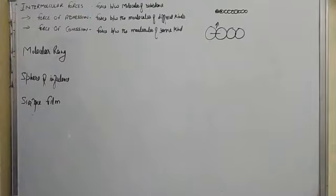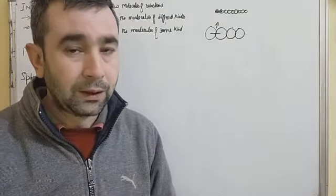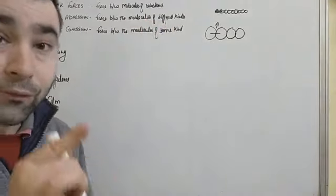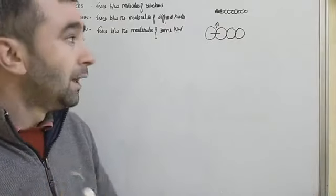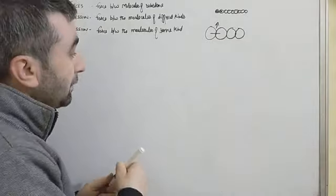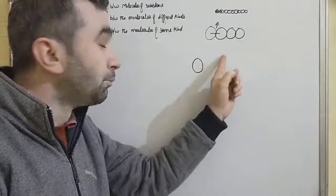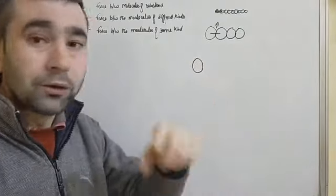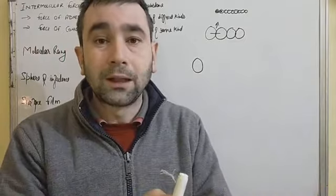Now let us discuss the types of intermolecular forces. The first type is the force of adhesion. The force of adhesion means the force between molecules of different kinds. For example, the board is different and the marker is different, but the molecules of the marker are sticking with the board. So when I write something on the board, the molecules create a bond with it — the board is different and the marker molecules are different.